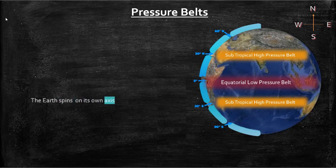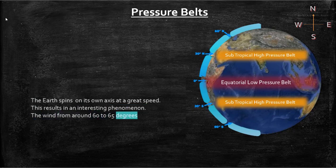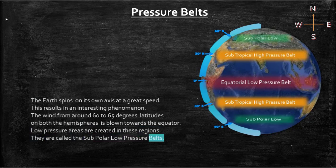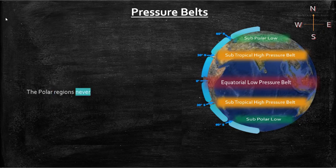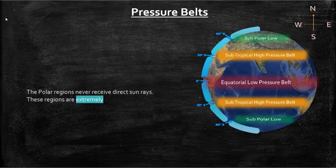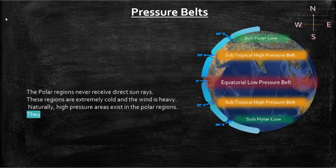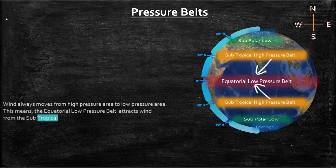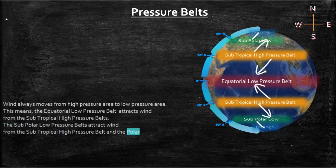The earth spins on its own axis at great speed, resulting in an interesting phenomenon. The wind from around 60 to 65 degrees latitudes on both hemispheres is blown towards the equator, creating low pressure areas called subpolar low pressure belts. The polar regions never receive direct sun rays — these regions are extremely cold, and high pressure areas called polar high pressure belts exist there. Wind always moves from high pressure to low pressure areas: the equatorial low pressure belt attracts wind from the subtropical high pressure belts, and the subpolar low pressure belts attract wind from both the subtropical and polar high pressure belts.